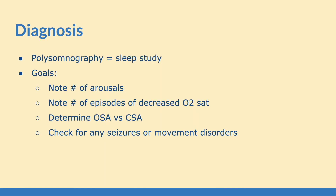To diagnose someone with either condition, what we want to do is get a sleep study. The goals of the sleep study are as follows: we want to note the number of arousals, note the number of episodes where oxygen saturation decreased, determine if it's OSA versus CSA, and then look for any seizures or movement disorders.